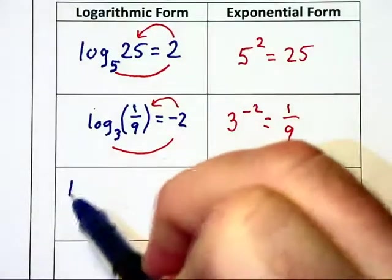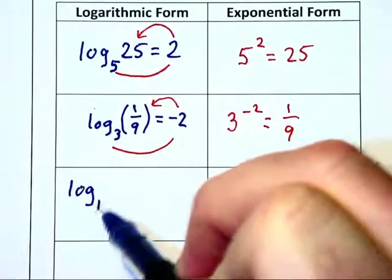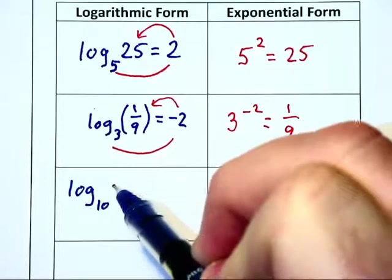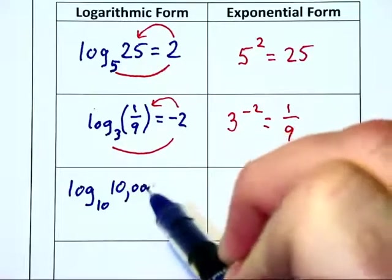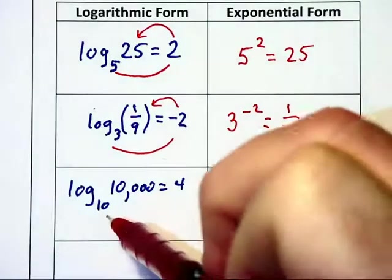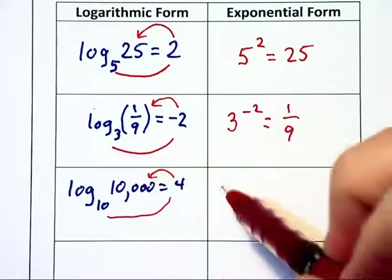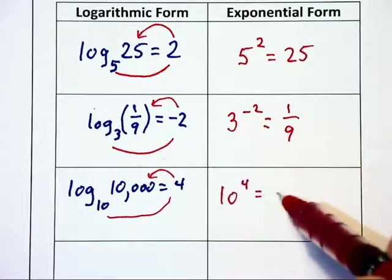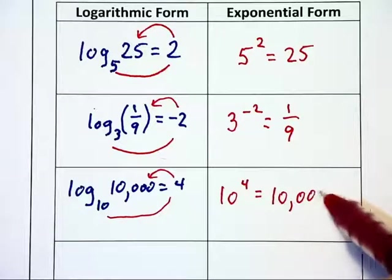Let's look at a third example. Log base 10 of 10,000 is equal to 4. In exponential form, that would be 10 to the fourth power is equal to 10,000.